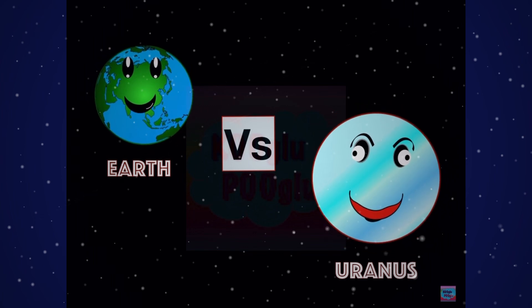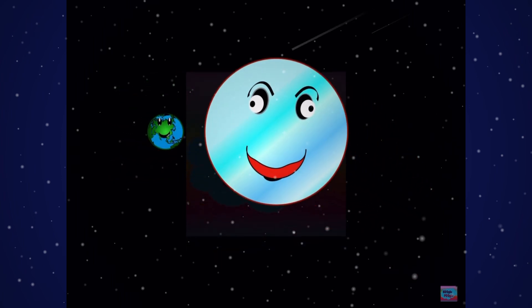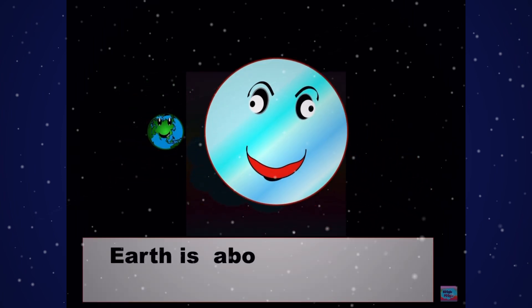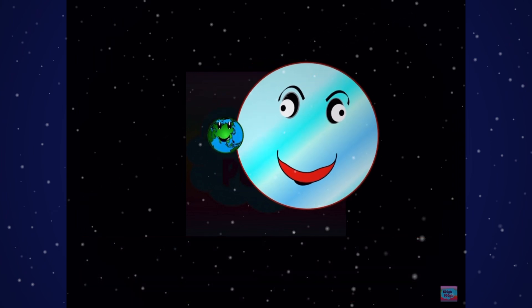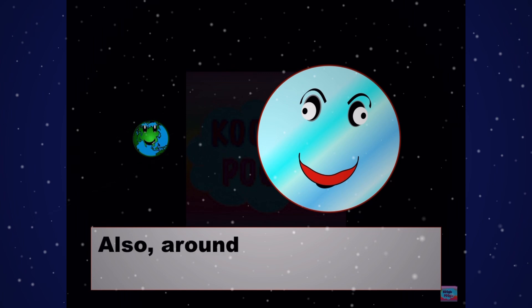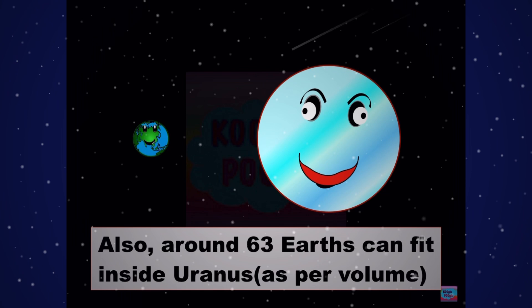Earth versus Uranus. Earth is about four times smaller than Uranus as per diameter, so let's count: one, two, three, four. Also, around 63 Earths can fit inside Uranus as per volume.